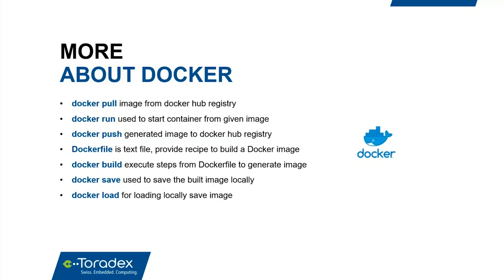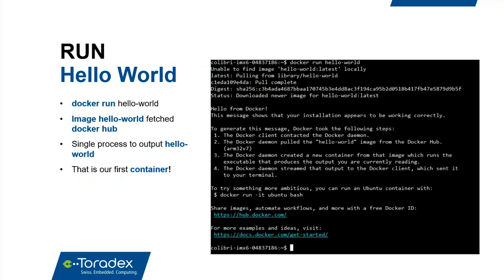A Dockerfile provides the recipe — all steps used by `docker build` to generate an image, which can then be deployed locally or pushed to Docker Hub. For offline deployment without repeated hub access, `docker save` exports a built image to the local filesystem and `docker load` imports it — allowing transfer to a Toradex module for running containers offline.